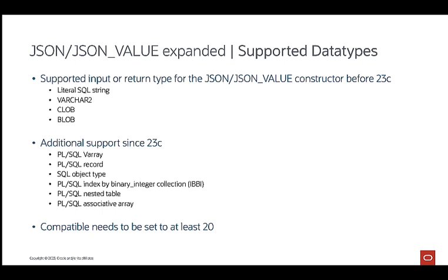You can use the new functionality in a 23c database or higher with compatibility set to at least 20. Before 23c, only VARCHAR2, CLOB, and BLOB data types were supported as input for the JSON function or return type for the JSON value function. When using database version 23c and higher, PL/SQL aggregates become supported data types as well, like varays, records, object types from the database, nested tables, and associative arrays.